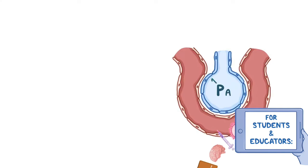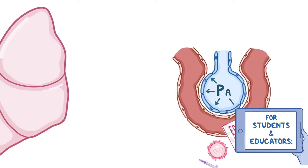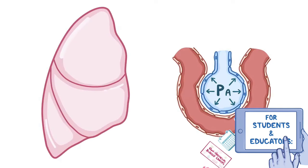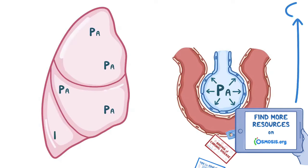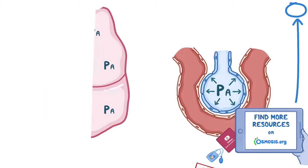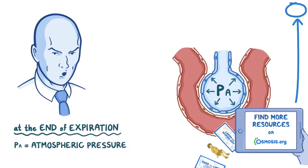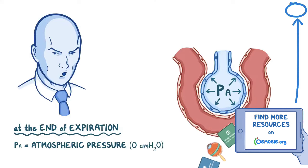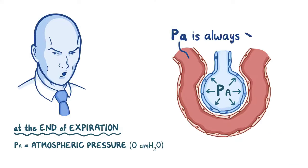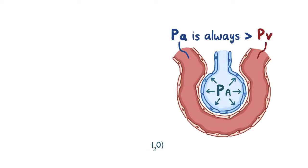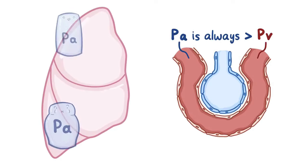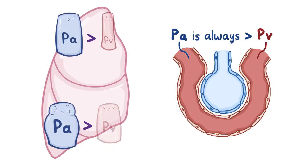PAA, which is the pressure within the alveoli of the lungs, is relatively constant throughout the lungs. At the end of expiration, it's equal to atmospheric pressure, which is 0 cm of water. And although the pressure in the arterioles is greater than the pressure in the venules, their values change at different vertical levels within the lungs.